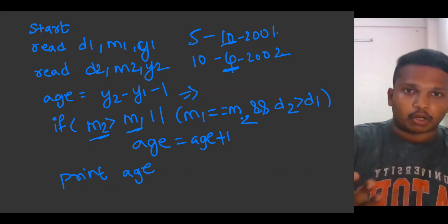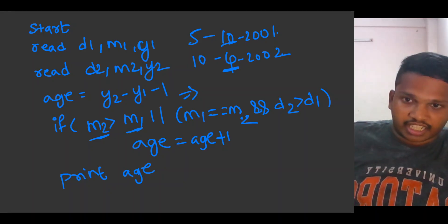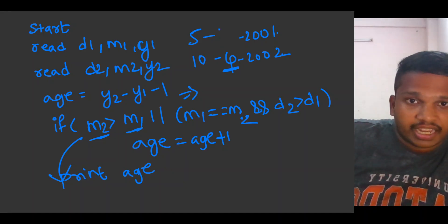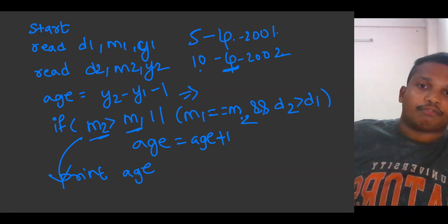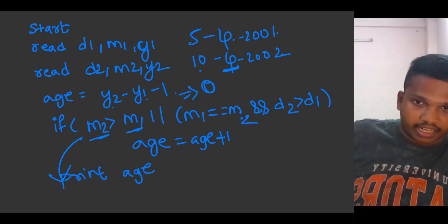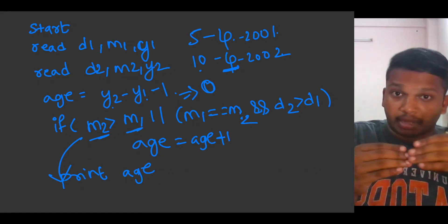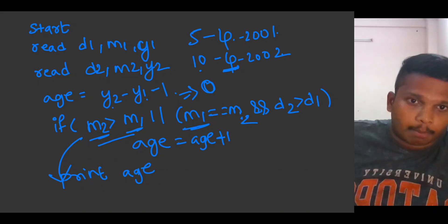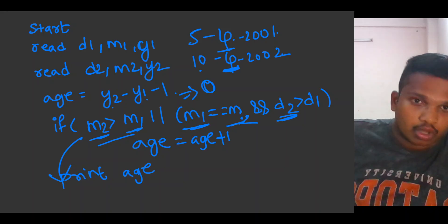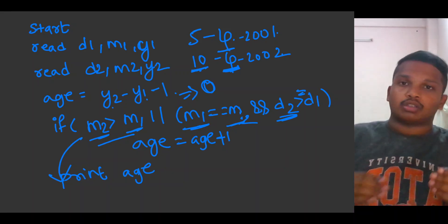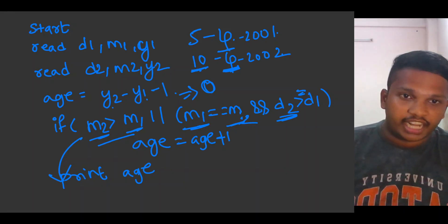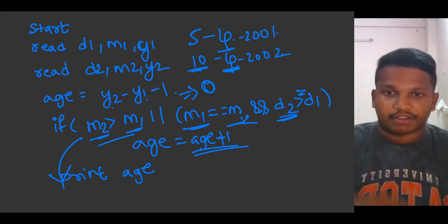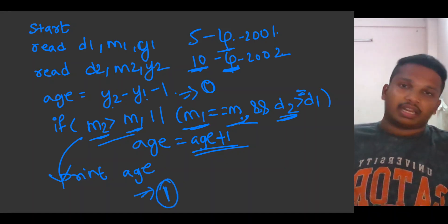We are in April — we haven't crossed October yet, so just print the age as zero. Or if month is matching, check if day two is greater than or equal to day one. For example, born on 5th May, current date is 10/4. Check M2 greater than M1: he hasn't crossed May. If month is matching, check date two — 10 is greater than or equal to day one (5), so age equals age plus one. He has crossed his birthday, age is one.